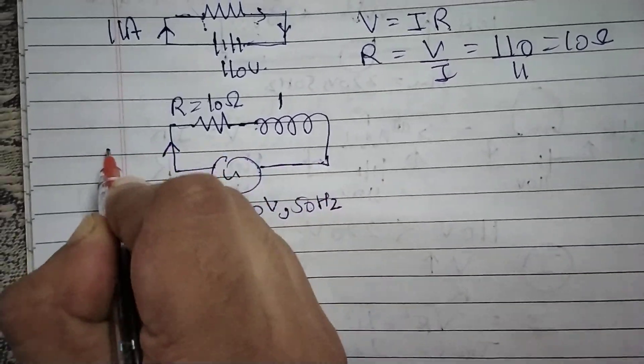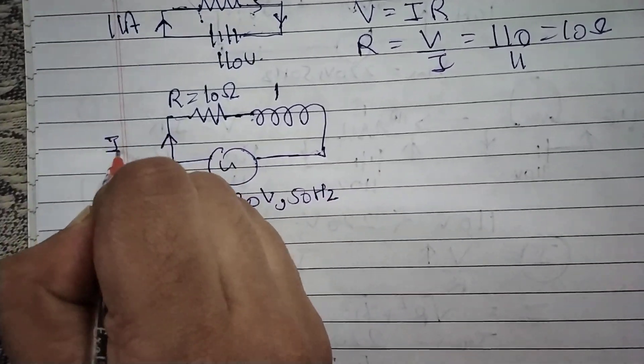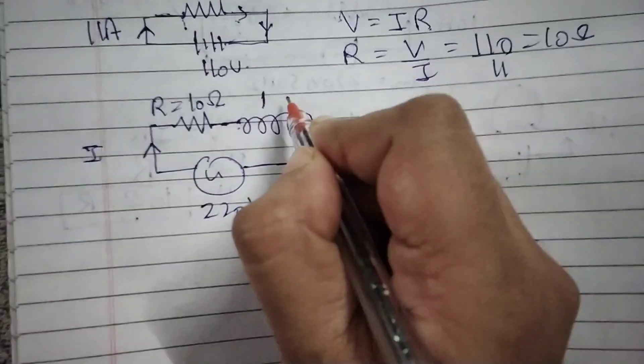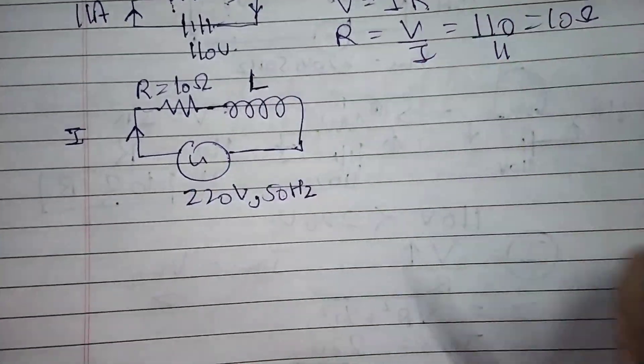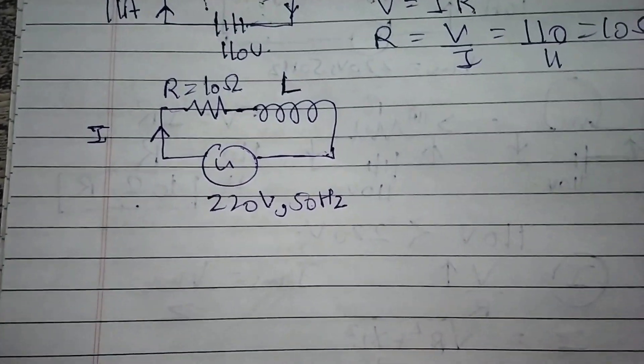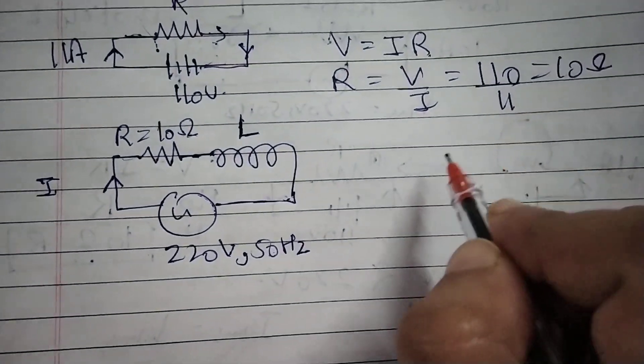The bulb has resistance 10 ohms. The current flows through the circuit, and the coil has inductance L. We need to find the value of L.